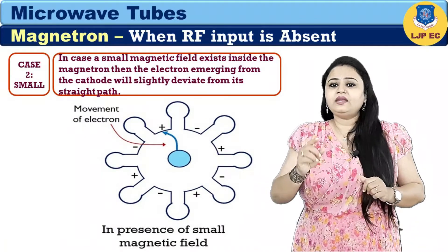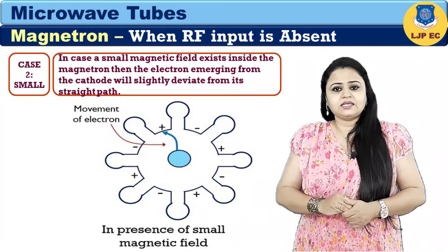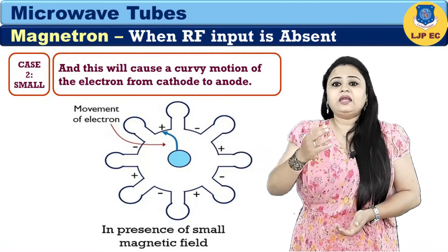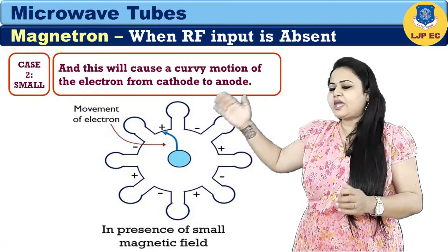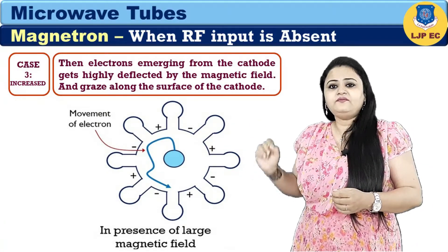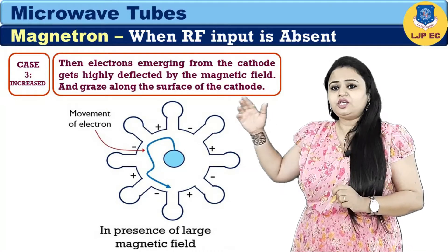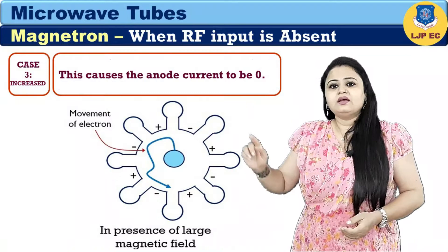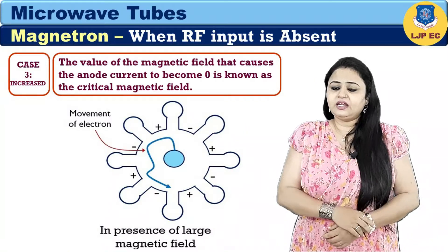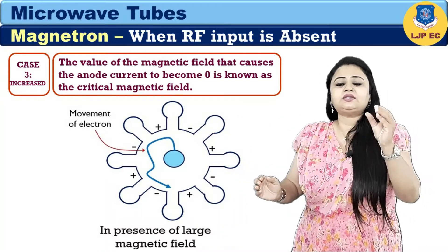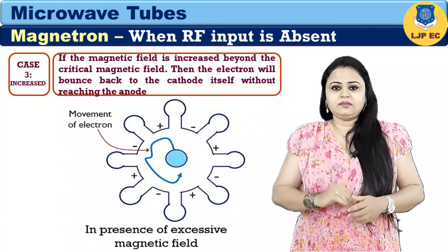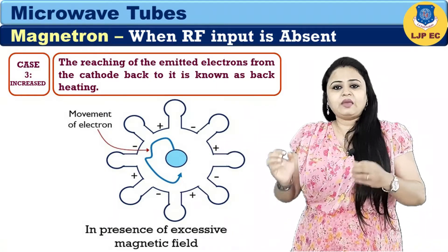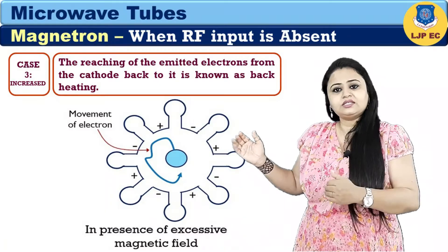In case two, when a small magnetic field is present, the electron emerging from the cathode will slightly deviate from its straight path, causing a curvy motion from cathode to anode. In case three, when the magnetic field is further increased, electrons get highly deflected and graze along the surface of the cathode, causing the anode current to become zero. This critical value of magnetic field is known as the critical magnetic field. If increased beyond this, electrons bounce back to the cathode — a phenomenon known as back heating.